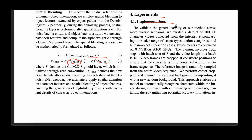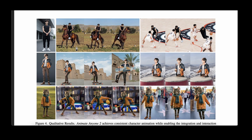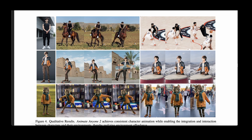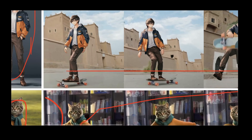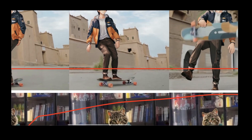Experiments were conducted on 8 NVIDIA A100 GPUs, trained for 100,000 steps with a batch size of 8 and a video length of 16 frames. The reference image is randomly sampled from the video sequence using center cropping. The qualitative results are impressive — characters are animated realistically, with particular attention to where feet meet the ground looking very realistic.